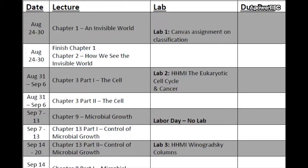Here is what the course schedule looks like for this semester. In the left column you have the week for each lecture, lab, or exam. We'll start with Chapter 1 for the first lecture, then finish Chapter 1 and do Chapter 2, all due the first week. Labs are listed in a separate column — for example, Lab 1 is a Canvas assignment on classification. Checkpoint questions and lab assignments are due at the end of each week; for example, both are due on August 30th, a Sunday, at 11:59 PM.